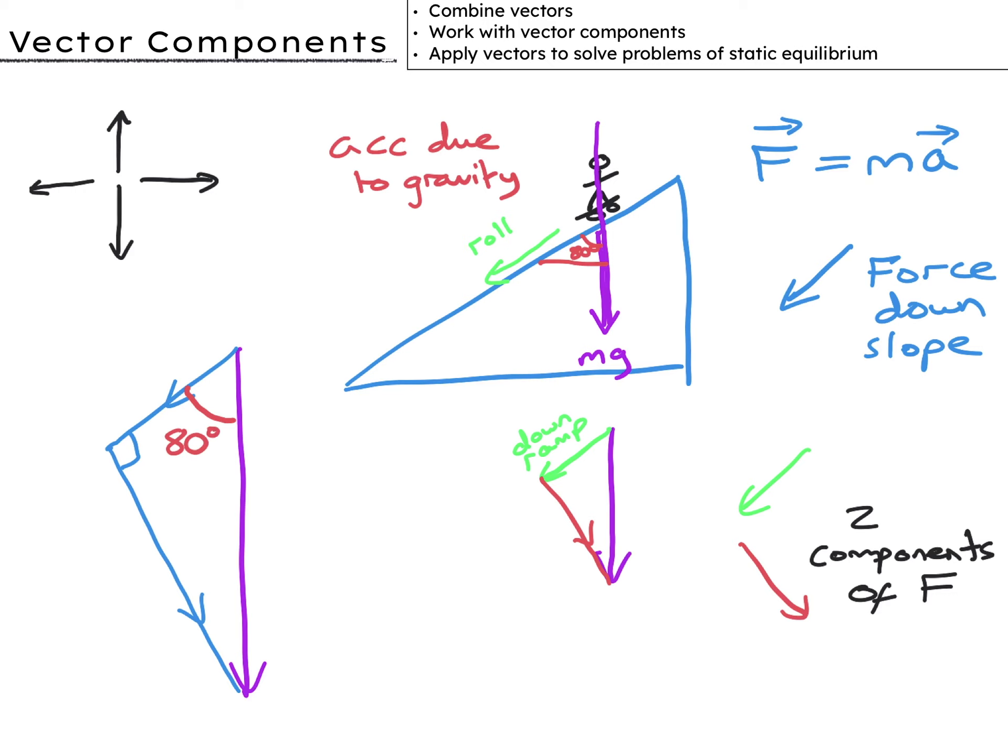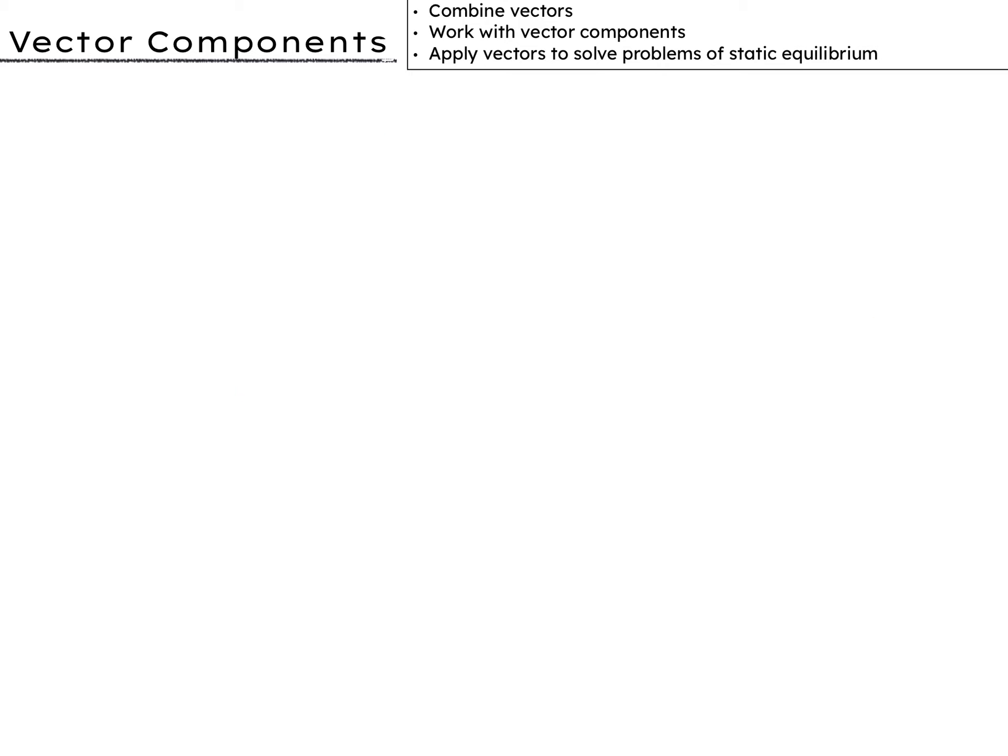Let's look at a bigger triangle of the forces. It's a right angle triangle, so cos theta equals adjacent over hypotenuse. So the force down the slope is W cos theta.